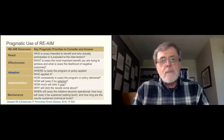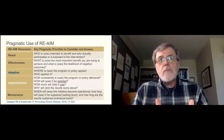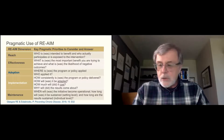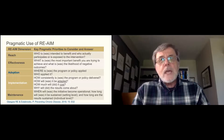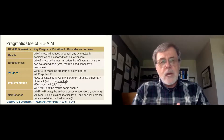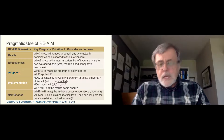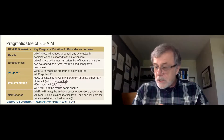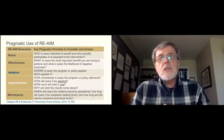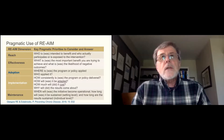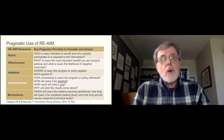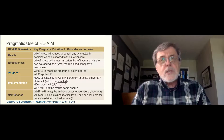Going back to why we created RE-AIM — one reason was to get across that all dimensions are important. You need them all in order to produce widespread population or public health impact. There are nuances: if you try to maximize just one dimension — for example, effectiveness — that often has unintended negative consequences on things like reach, or can even adversely affect health equity. So it's this notion that you really can't have it all, and all of these things need to fit together. The last challenge is that historically RE-AIM has not been rapid enough to keep pace with the demands of real-world settings — this is a work in progress.